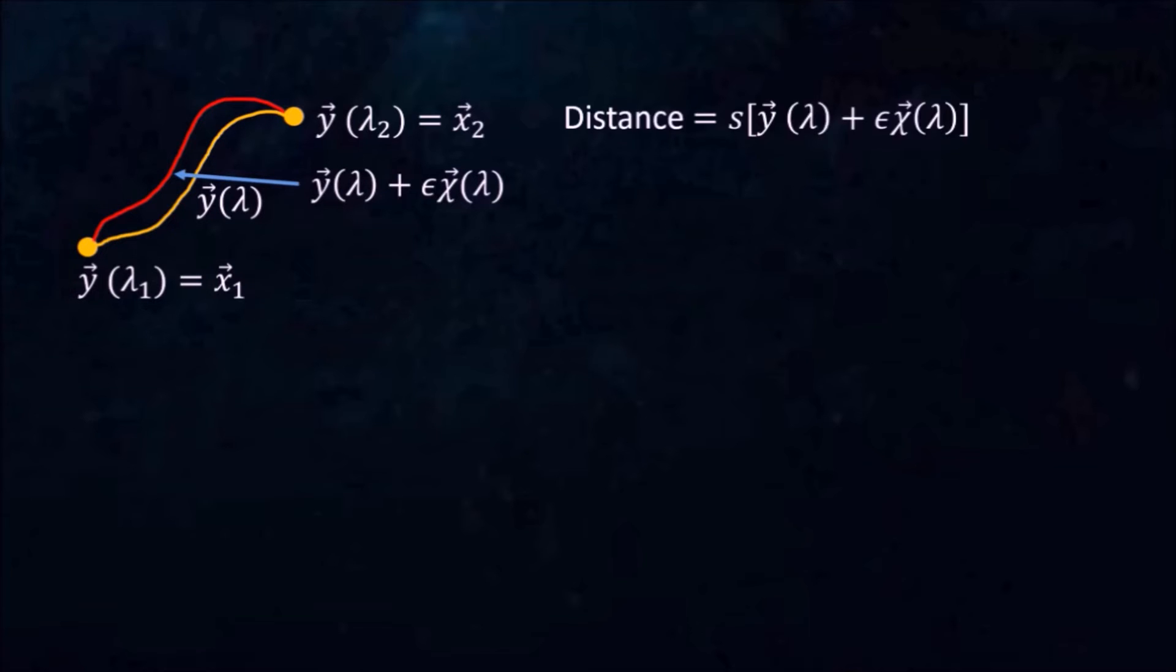The distance along this curve is s, evaluated at y plus epsilon chi. Notice that s is now a function of only one parameter, epsilon. If epsilon is 0, the distance is an extremum.